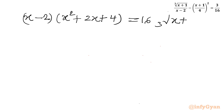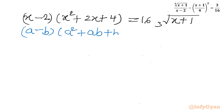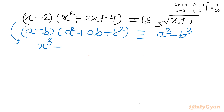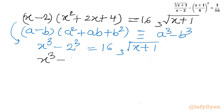Looking at the LHS, I recognize an algebraic identity: (a - b)(a² + ab + b²) = a³ - b³. So (x - 2)(x² + 2x + 4) = x³ - 2³ = x³ - 8. The equation becomes: x³ - 8 = 16 · cube root(x + 1).